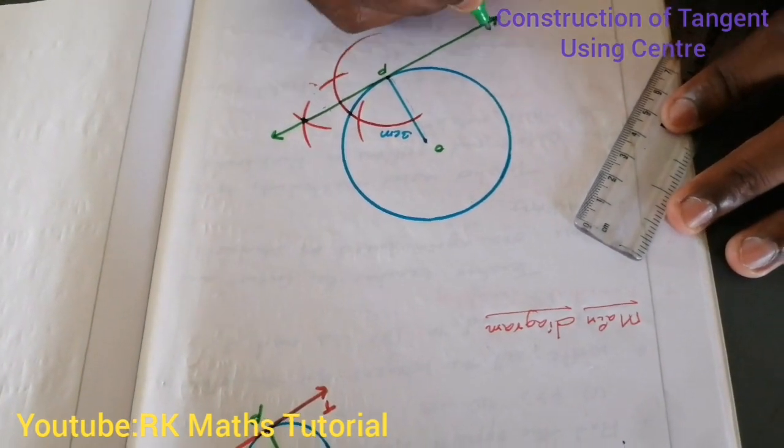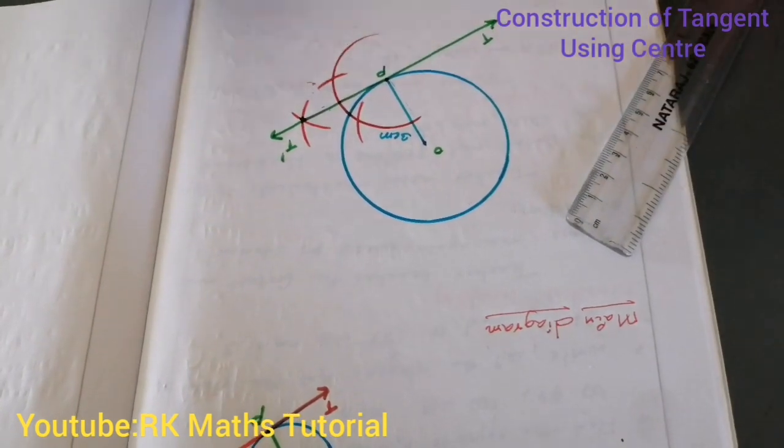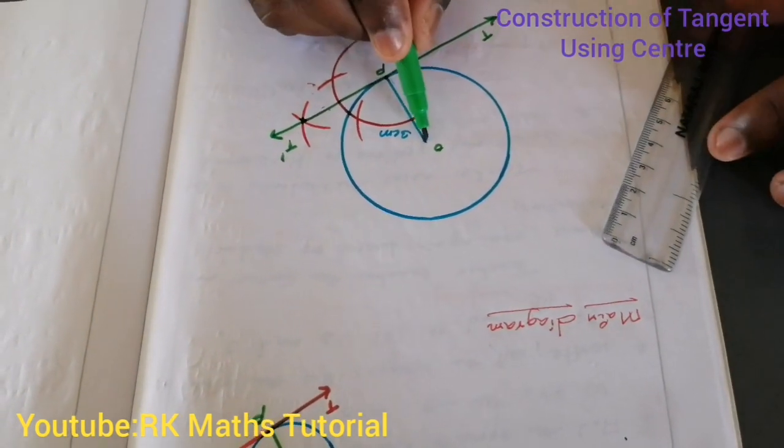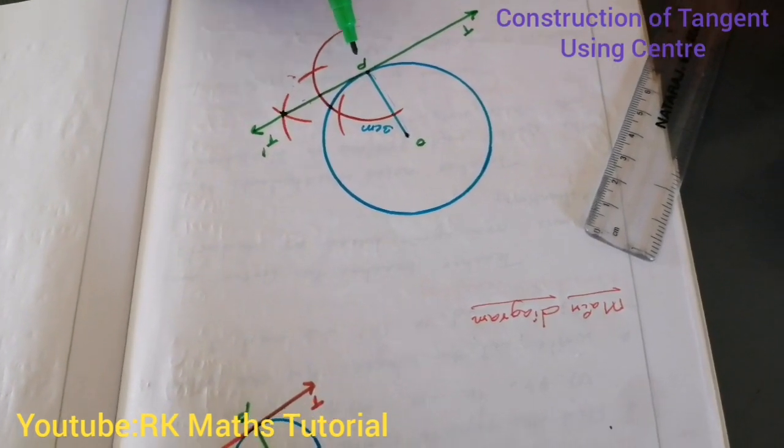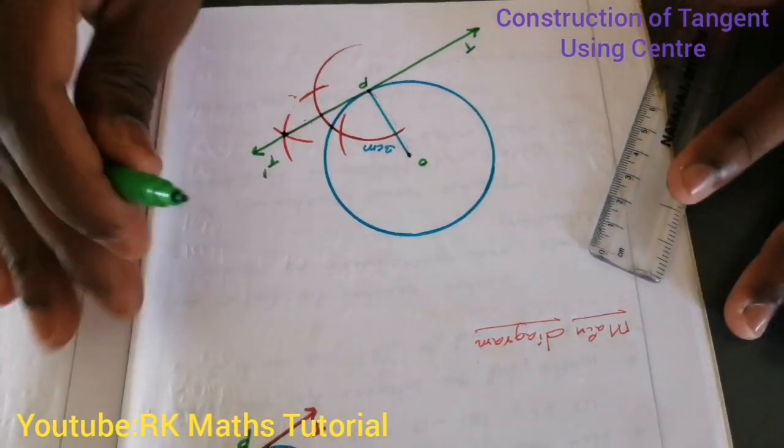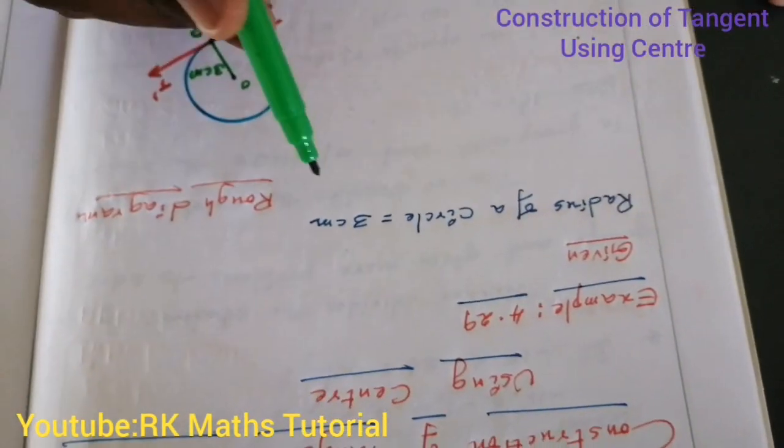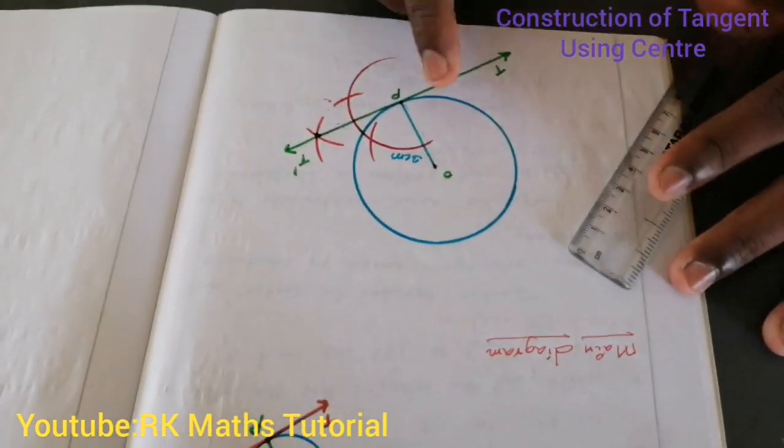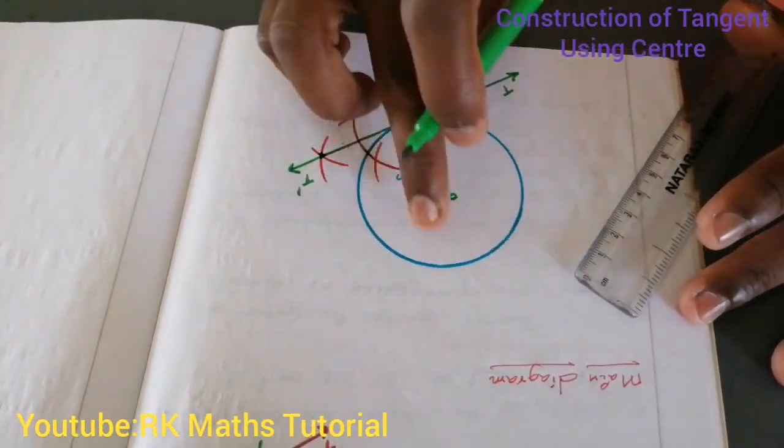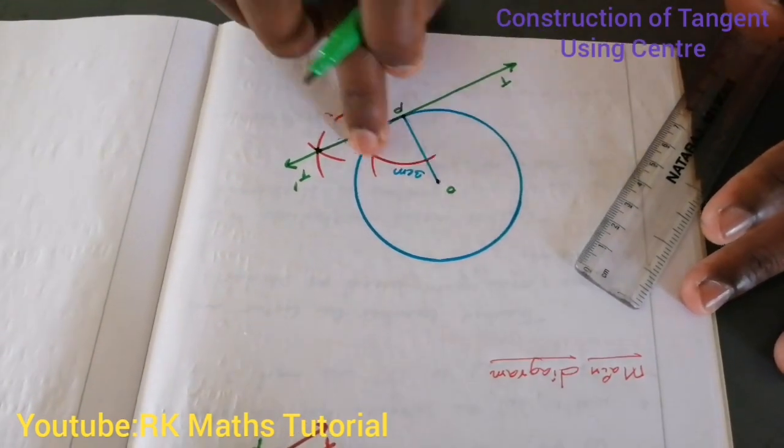Join these points. So, this is T and T', the tangent. So, using the center, we construct a tangent on a circle. At a point on the circle, we can drop the tangent. For example, the radius is equal. The rough diagram is the same thing. This is the circle, point, and join. Then, I mark a point on the circle and construct the perpendicular.